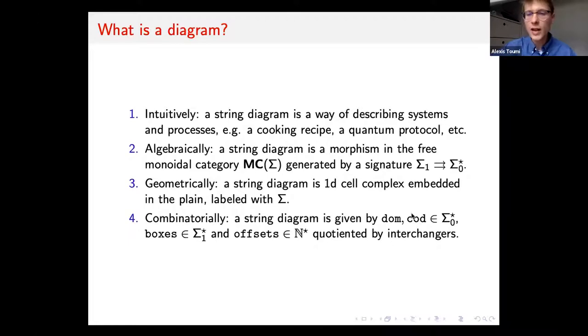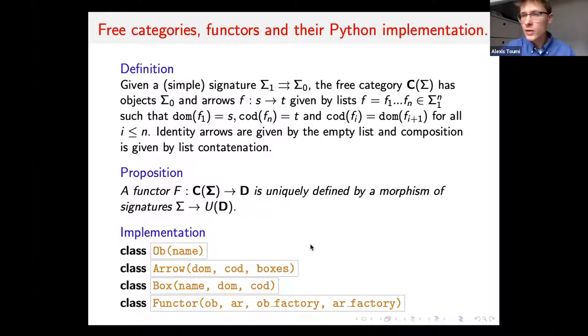What's nice is that it also corresponds to the geometric definition where a string diagram is a 1D cell complex embedded in the plane, labeled with this signature. The combinatorial definition we'll use is given by domain and codomain, which are strings of objects, a list of boxes and a list of offsets. That's the minimum data we need to store it in Python.